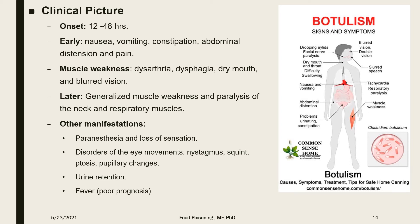With disease progression, generalized muscle weakness occurs, leading to paralysis of the neck and respiratory muscles. Other manifestations include paresthesia and loss of sensation, and disturbed eye movements in the form of nystagmus or squint due to affection of the cranial nerves. Parasympathetic manifestations include urine retention. If fever occurs, it indicates a very poor prognosis, signifying failure of the thermoregulatory center in the brain — it is not from the infection itself.